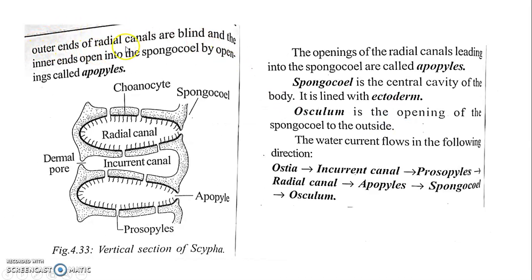The outer ends of the radial canals are blind, and the inner ends open into the spongocoel by an opening called the Apopyle. Through this Prosophile, water moves from the incurrent canal into the radial canal. This opening into the spongocoel is called the Apopyle.